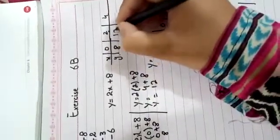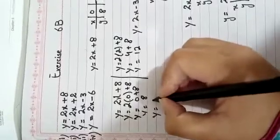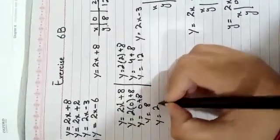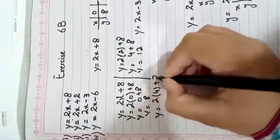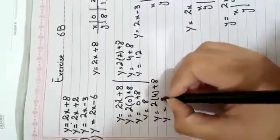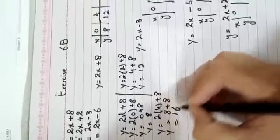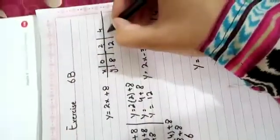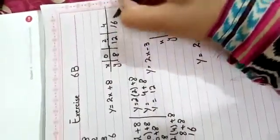When x is two, y is twelve. Next: y equals two into four plus eight. Two times four is eight, plus eight makes sixteen. When x is four, y is sixteen.